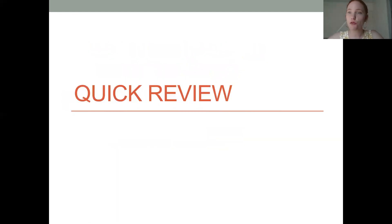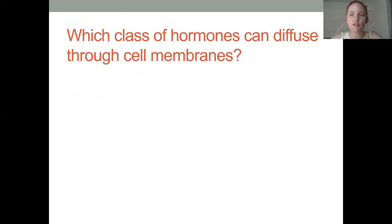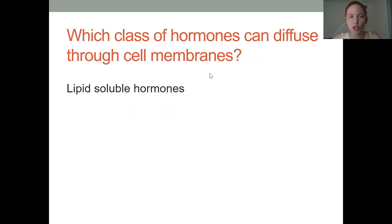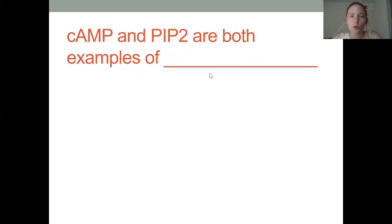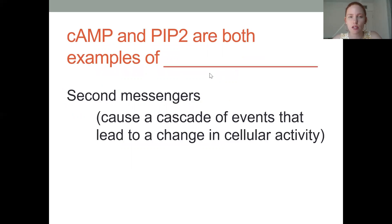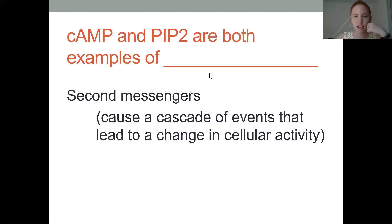Let's do a quick review. Lipid-soluble hormones can diffuse through the cell membrane because of the hydrophobic core of the plasma membrane. Cyclic AMP and PIP are both examples of second messengers — these are the ones that physically carry out the response in the cell.